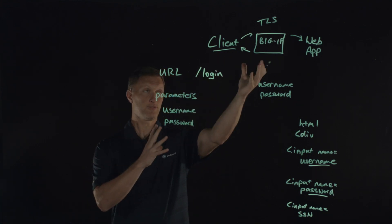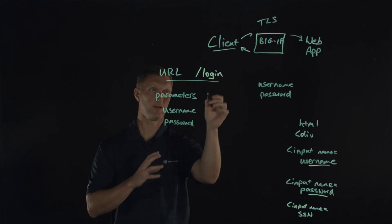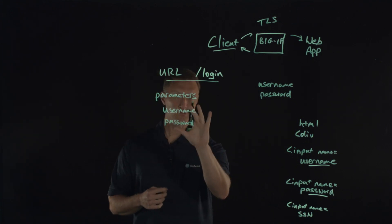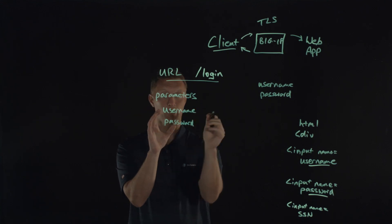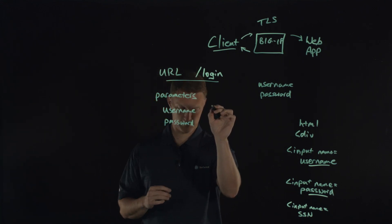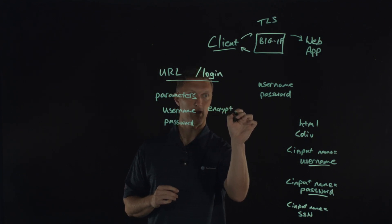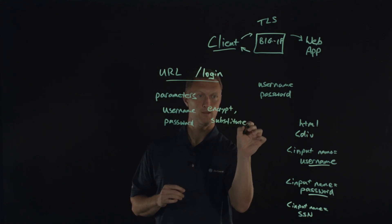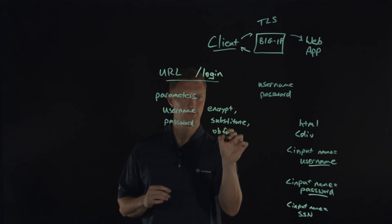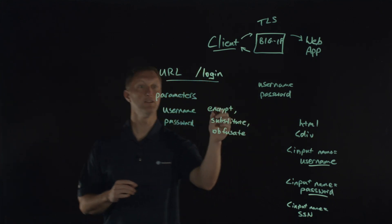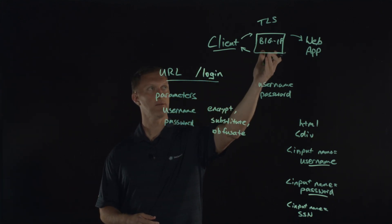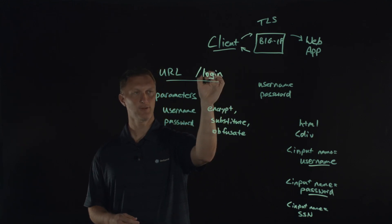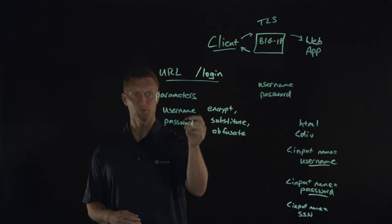What we've set in DataSafe is to target the URL slash login and specifically target the parameters called username and password. On any parameter you select, there are a few different options you can apply. You can say encrypt — another one is substitute — and the last one is obfuscate. You now have the ability, as the BIG-IP directly interacts with the client's browser, to say: for these specific parameters at this specific URL, I want to encrypt the values for those parameters.